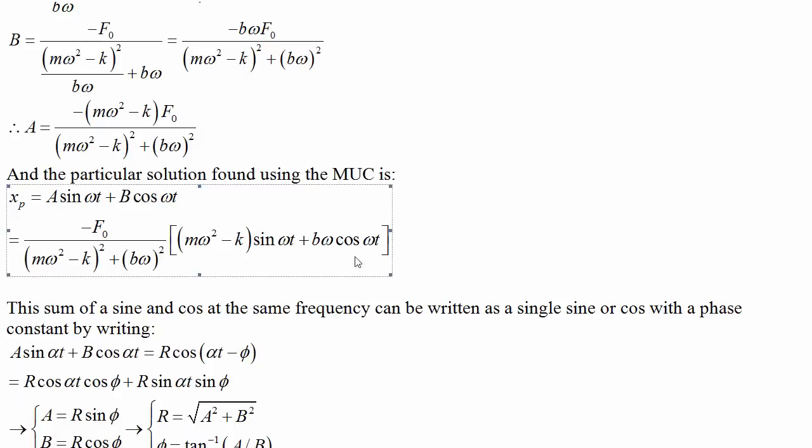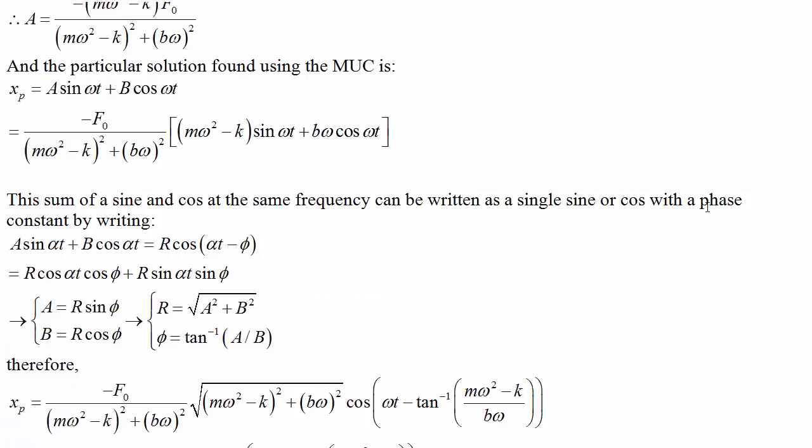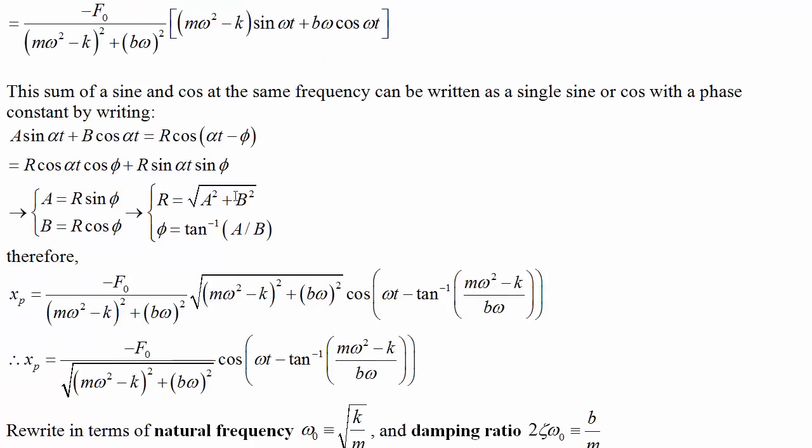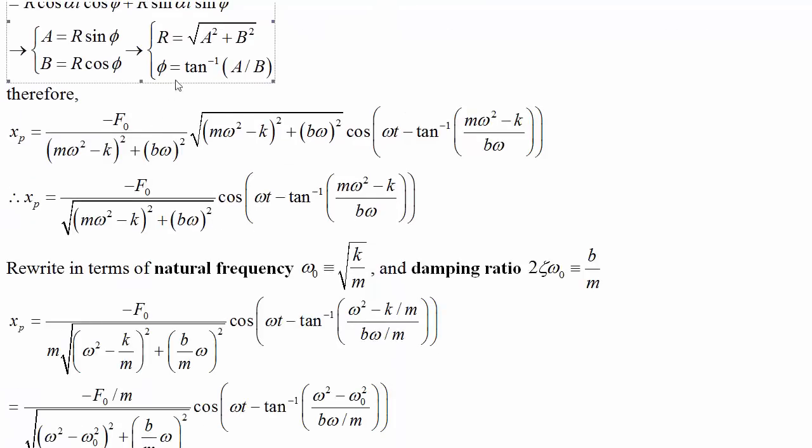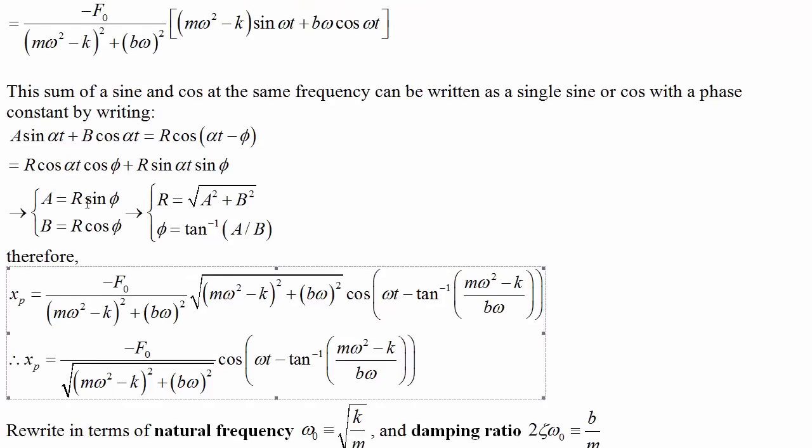It's a sum of a sine and cos at the same frequency, so we can rewrite that as a single sine or cos with a phase constant. Let's try writing it as a single cosine. We'll use the sum angle formula for cosine to expand the term on the right, then equate the left and right sides to rewrite xp in terms of just a single cos with a phase shift.